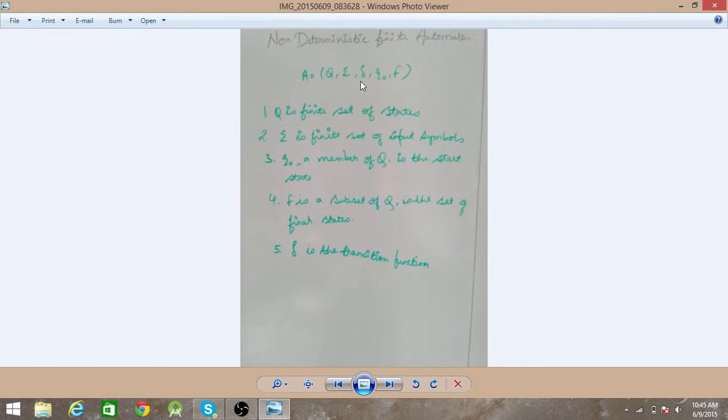So the transition function in DFA takes only one state and one input and goes to the next state. But in case of non-deterministic finite automata, it takes a state and input as a symbol as an argument and it returns 0, 1 or more than 1 states. So it can be in more than 1 state with the same input. So that is what the main difference is.